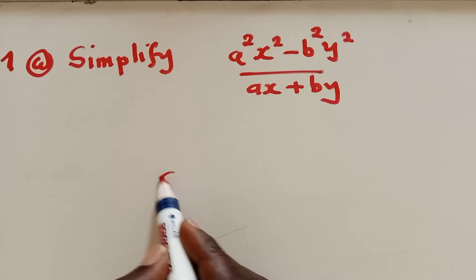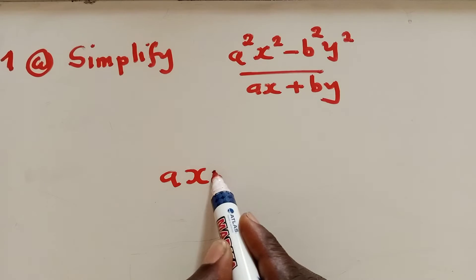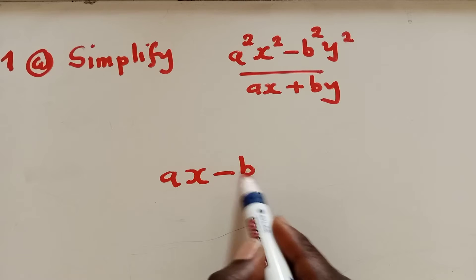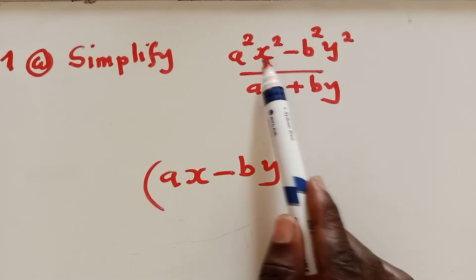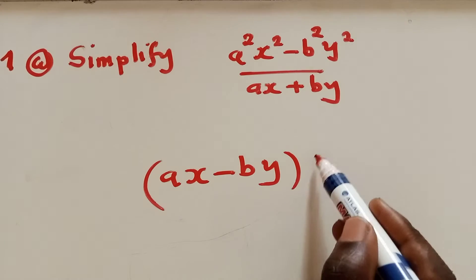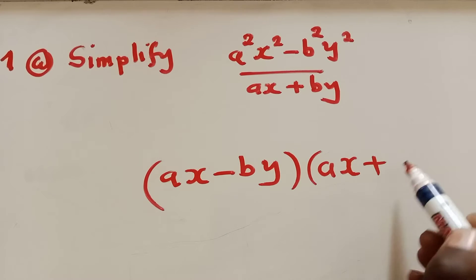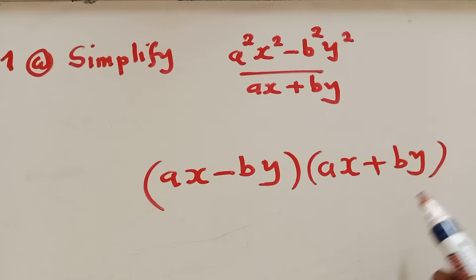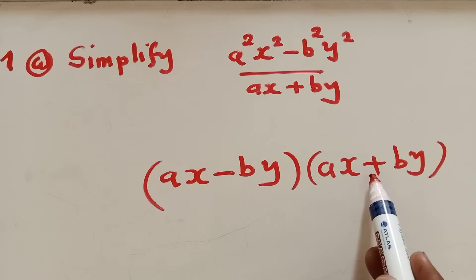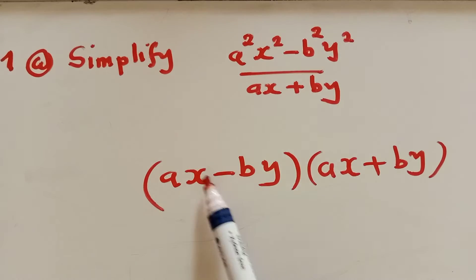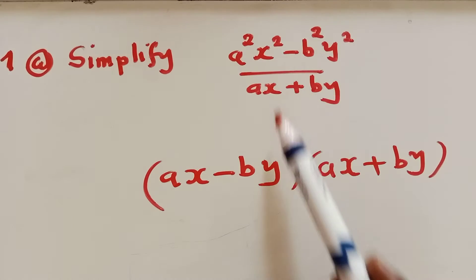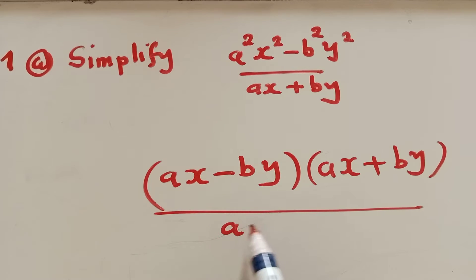You just say ax minus by. You copy what is here without the powers. The next thing will just be to get the same stuff, change the sign which is in between. Put it plus. This is minus here, put it plus. So this expression is the same as what we have here because when we multiply, we'll still get the same. These brackets are telling us to multiply. So we say over ax plus by.